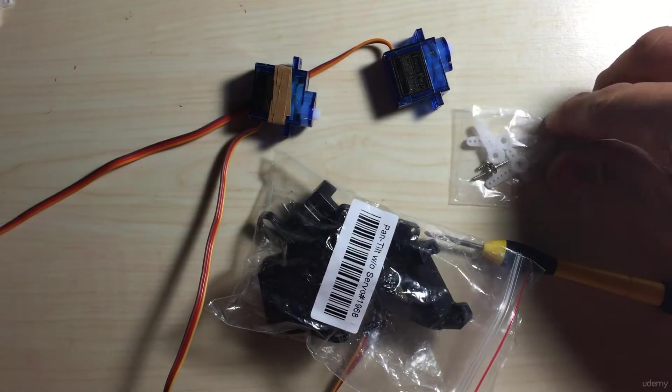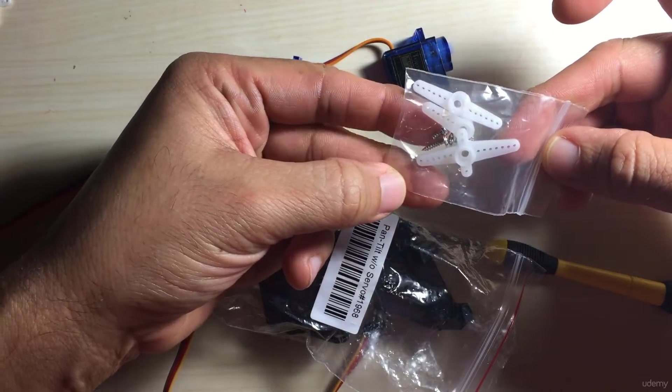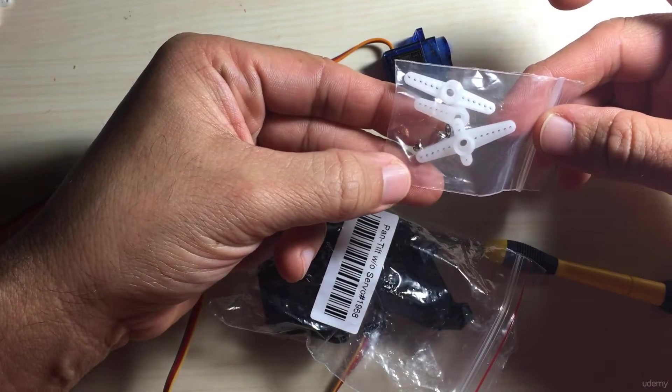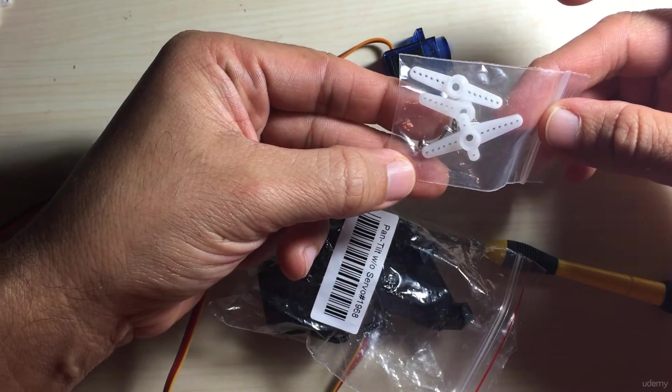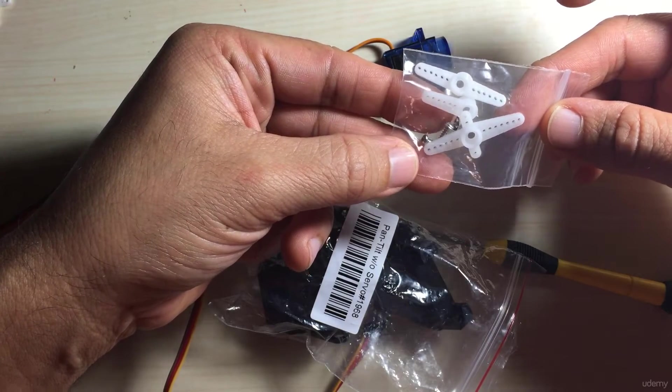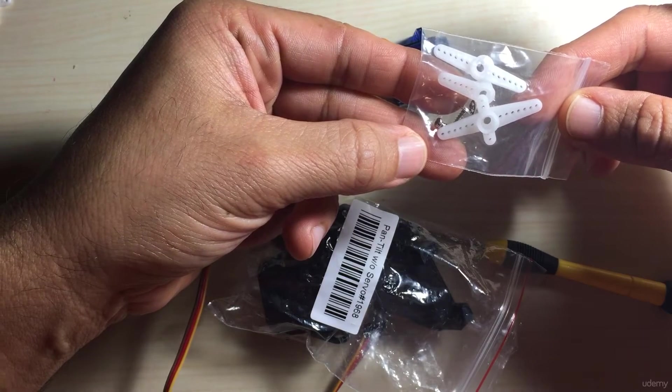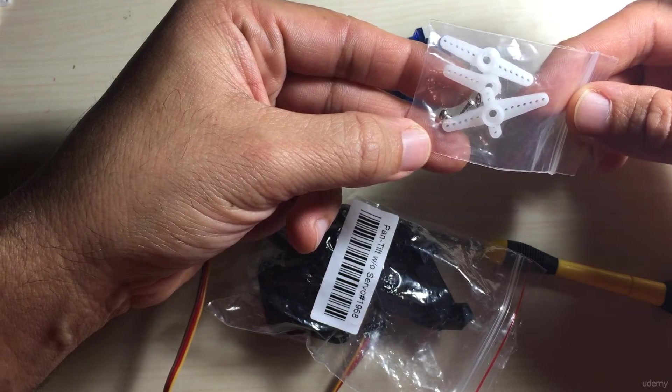Generally with the servos you get an assortment of servo horns or connections. Depending on which types of horns you may have received with your servo you may need to cut a couple of them to actually fit into the assembly. We'll talk about that shortly when we get to the actual assembly.